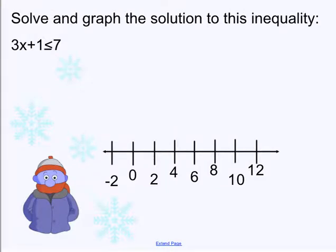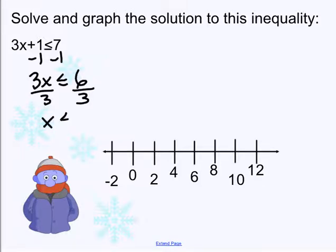Solve and graph the solution. So just like an equation, we are going to solve this for x. So I'm going to subtract 1 and get 3x is less than or equal to 6. Divide by 3, and we get x is less than or equal to 2. Meaning any number, including 2, or anything less than it, will work in this equation. So I put a filled in dot on 2 and point to the left, showing I want the answers that are lower than 2 and including 2. That's what that less than or equal sign means.